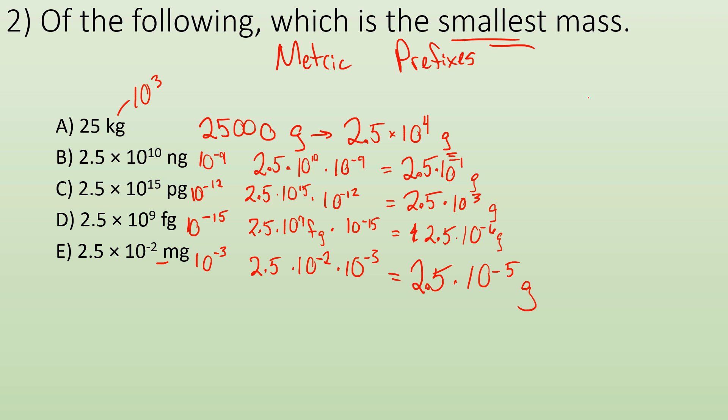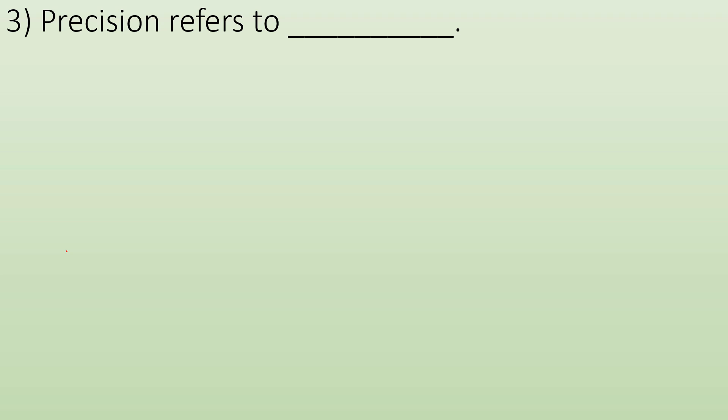So if it's looking for the smallest one, we want the largest negative exponent, which is going to be choice D, 10 to the minus 6. So yeah, scientific notation.